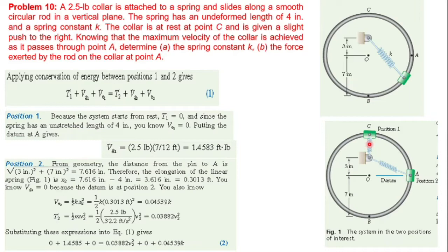For potential energy due to gravity, we set the datum level. The geometry gives a distance of three plus four equals seven inches from C to A in the vertical direction. So the gravitational potential energy is W times seven inches, where W is 2.5 pounds, converted appropriately.